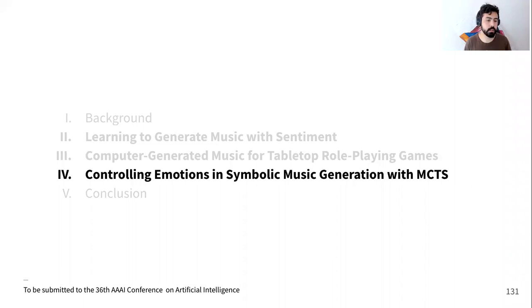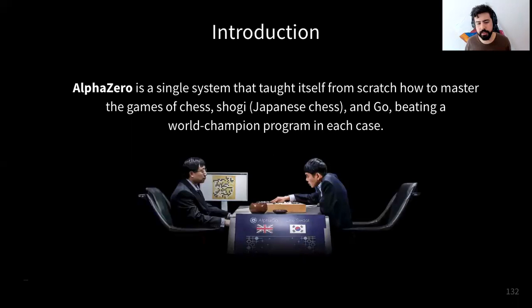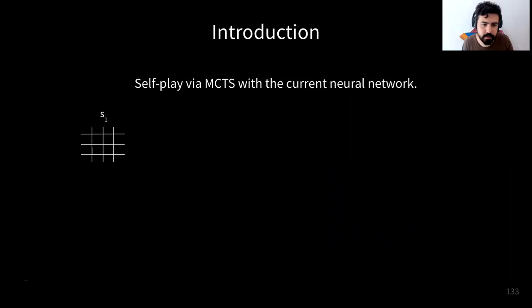Concluding the second work: we presented Bardo Composer, a system that generates background music for tabletop RPGs, and proposed Stochastic Bi-Objective Beam Search, a decoding algorithm that controls the language model with a music emotion classifier. Subjects identified the emotions of generated pieces as accurately as those of human-composed pieces. Now let's move to the third and final work: 'Controlling Emotions in Symbolic Music Generation with MCTS' — Monte Carlo Tree Search — which we are submitting to the AAAI conference.